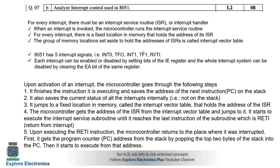The answer covers what happens when an interrupt is activated, the interrupt service routine, the different types of interrupts that can be enabled and disabled, and the steps followed once an interrupt is activated. Please cross-check this answer; if you have a better answer, comment below.